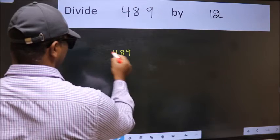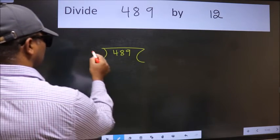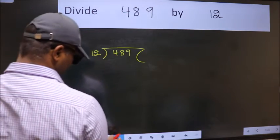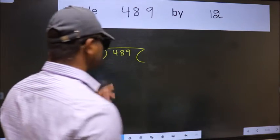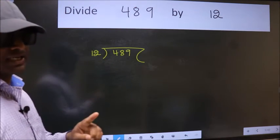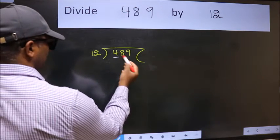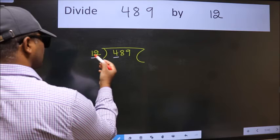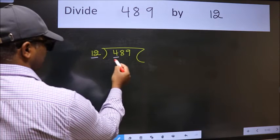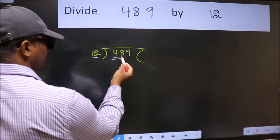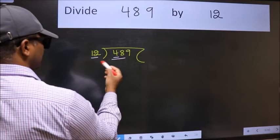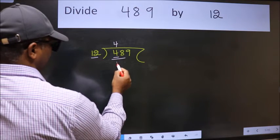489 here, 12 here. This is your step 1. Next, here we have 4 and here 12. 4 is smaller than 12, so take two numbers: 48. When do we get 48 in the 12 table? 12 times 4 is 48.